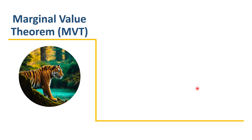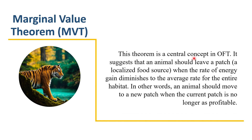The next point is the marginal value theorem. This theorem yields the concept of giving-up time — when an organism should leave a patch it is exploiting. This is a central concept in OFT. It suggests that an animal should leave a patch — the localized food source — when the rate of energy gain diminishes to the average rate for the entire habitat. At some point, an organism has to leave the patch it is exploiting.